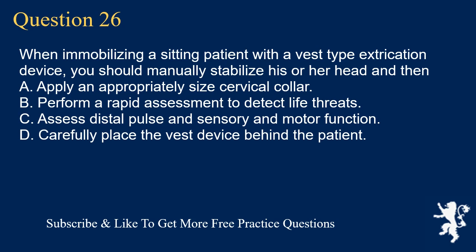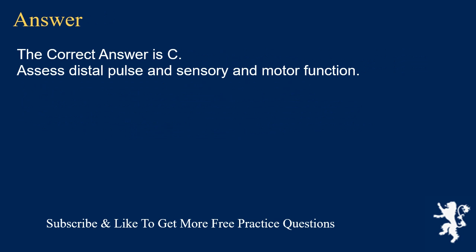Question 26. When immobilizing a sitting patient with a vest-type extrication device, you should manually stabilize his or her head and then: A. Apply an appropriately sized cervical collar. B. Perform a rapid assessment to detect life threats. C. Assess distal pulse and sensory and motor function. D. Carefully place the vest device behind the patient. The correct answer is C. Assess distal pulse and sensory and motor function.